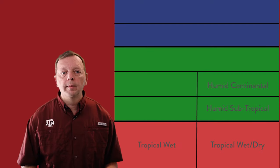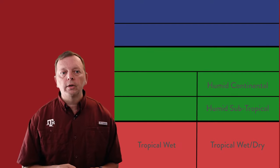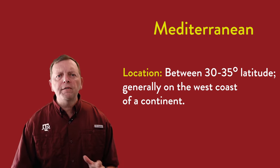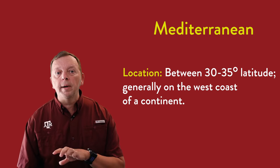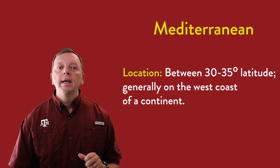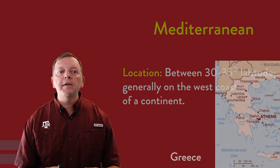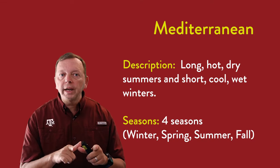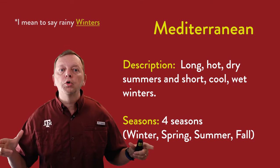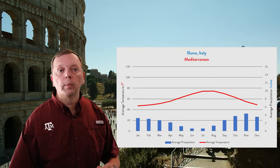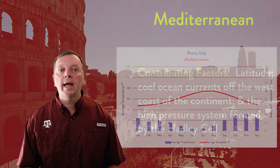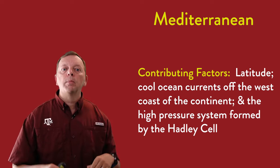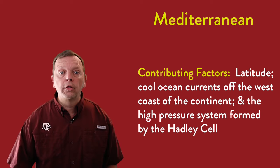Now let's look at our two west coast climates in the temperate latitudes: the Mediterranean and the marine west coast. The Mediterranean climate is usually found on the west coast of a continent between about 30 and 35 degrees latitude, named for the same type of climate found in Europe around the Mediterranean Sea. It has four seasons marked by short rainy winters and very long, dry summers — as shown in the climate graph from Rome, Italy. This climate is formed due to latitude, cool ocean currents off the west coast, and the high-pressure system of the Hadley cell pushing down dry air around 30 degrees latitude.